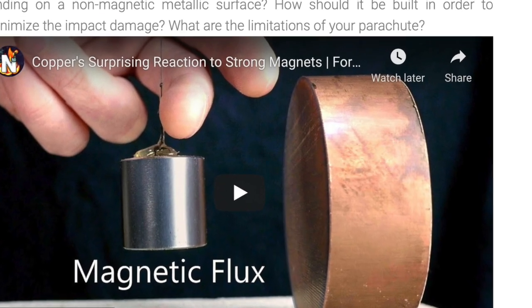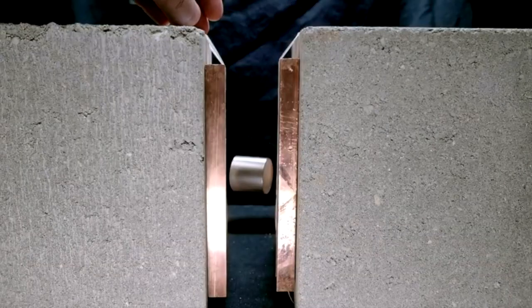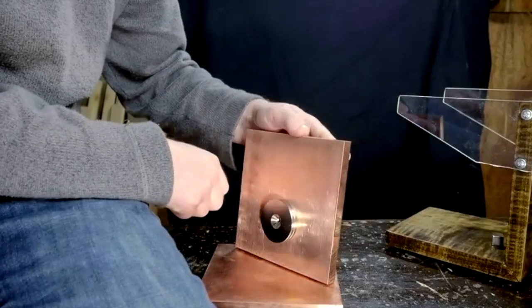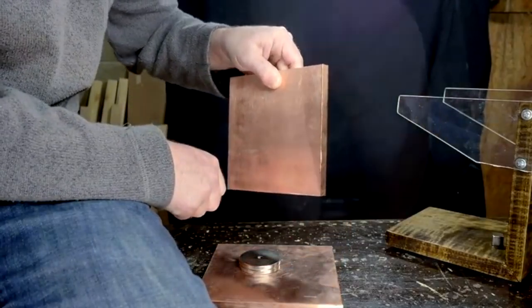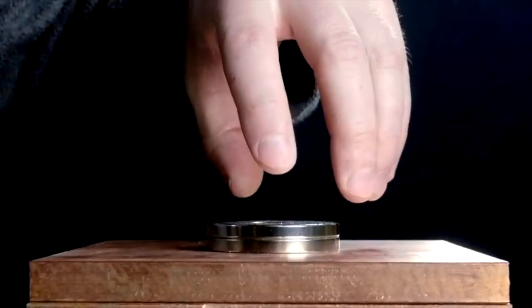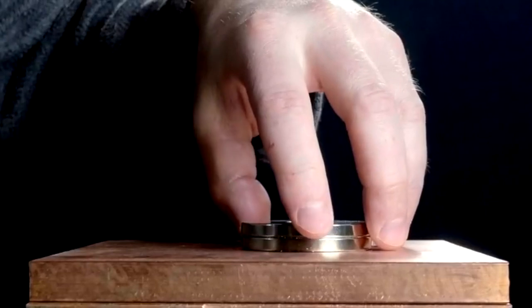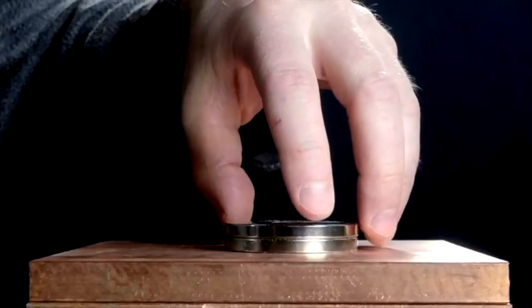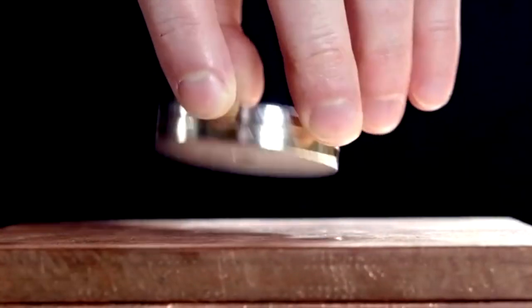Heavy parachute. Is it possible to build a magnetic parachute to protect the load from impact when landing on a non-magnetic metallic surface? How should it be built in order to minimize the impact damage?